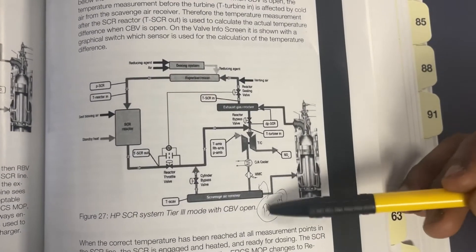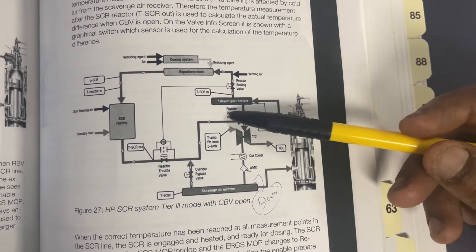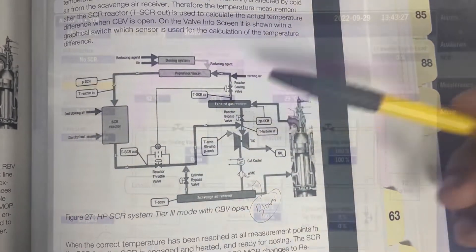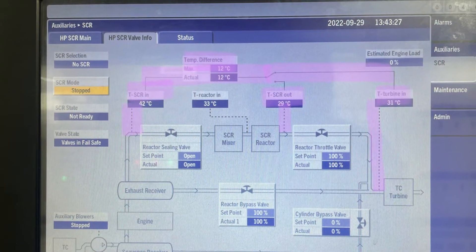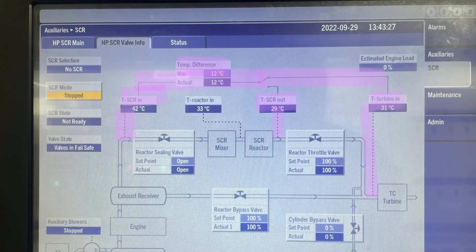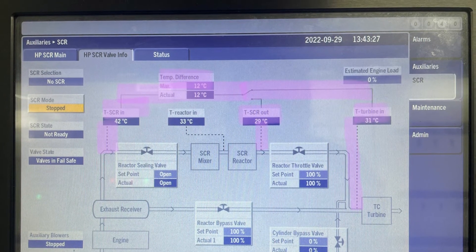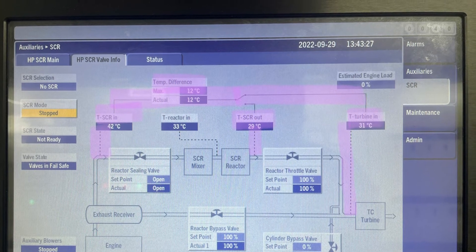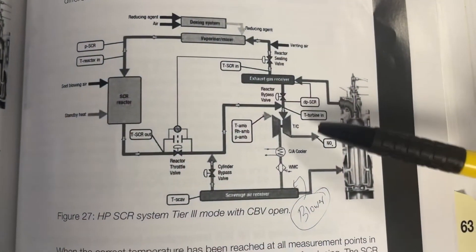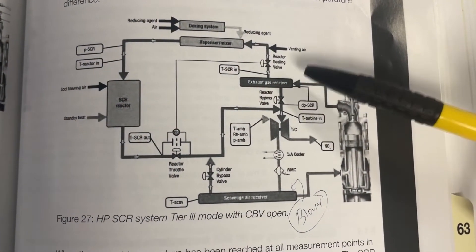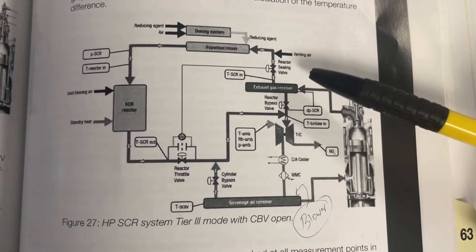When stopping this auxiliary blower, the exhaust gas temperature will increase. This exhaust temperature rise will exceed the temperature difference between the reactor inlet and the turbine inlet predefined value. This temperature difference will affect the valve control and RBV will open temporarily.